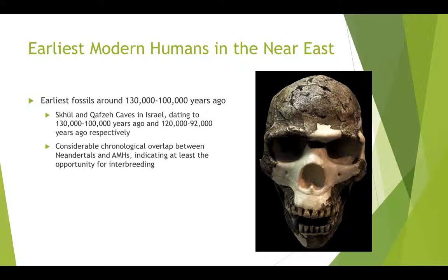In the Near East — the Middle East, Israel, etc. — the earliest fossils date to about 130,000 to 100,000 years ago. Two caves in particular are the Skhul Cave, dating to 130,000 years ago, and the Qafzeh Cave in Israel, dating to about 120,000 years ago. What we find in the Middle East is considerable chronological overlap between Neanderthals and modern humans — a period of overlap of roughly 30,000 to 60,000 years during which periods of interbreeding were not only possible but fairly likely.